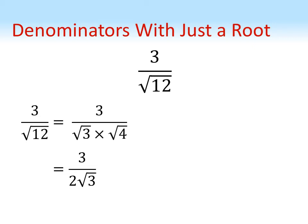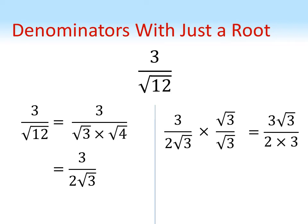We're simply going to times top and bottom by root three. Doing this we get three root three on the top. On the bottom we've got the two and the two root three is multiplied together to give another three. Well, we've got three top and bottom so they'll cancel out to give us root three over two.